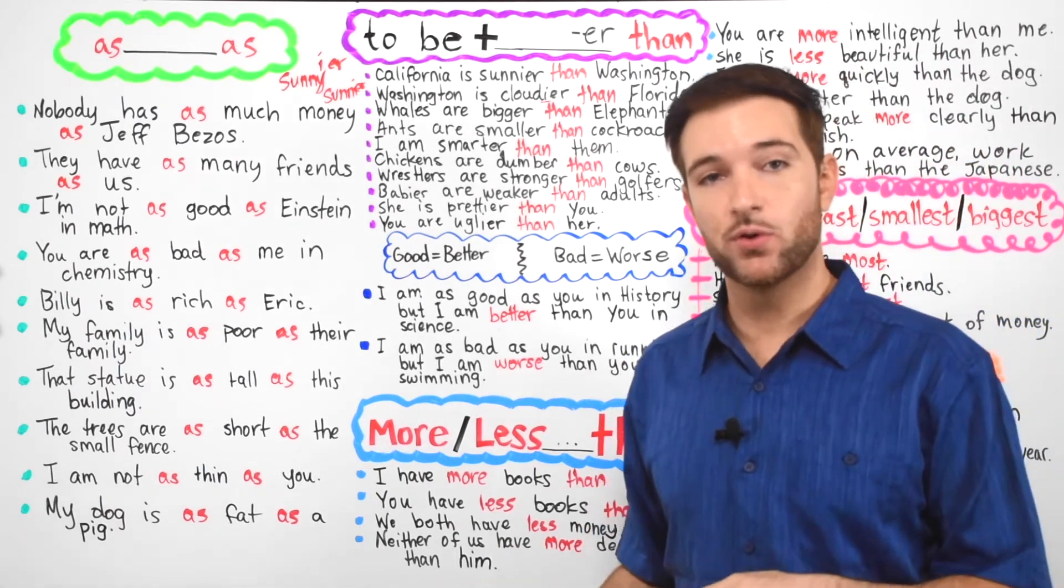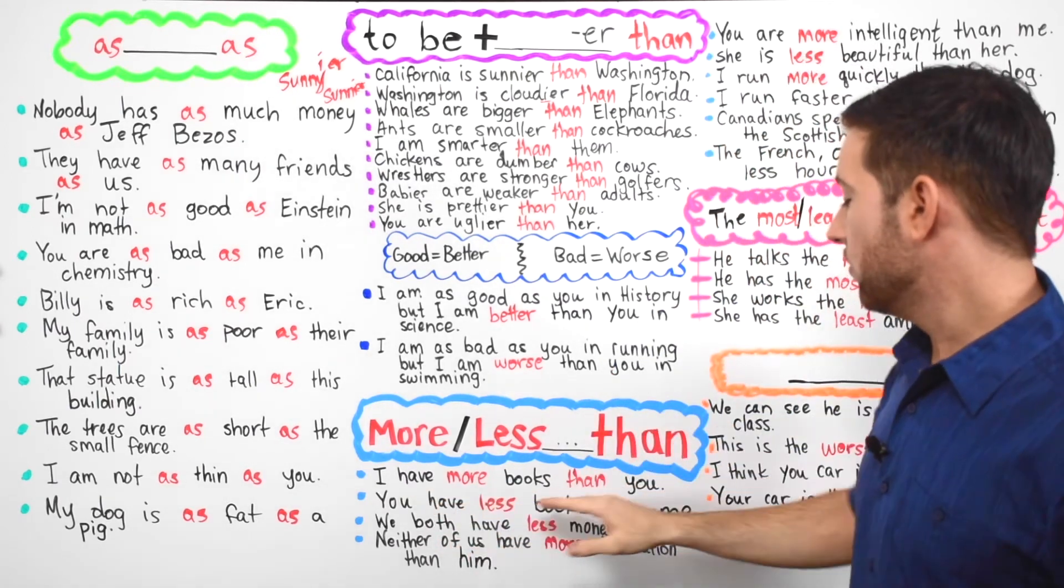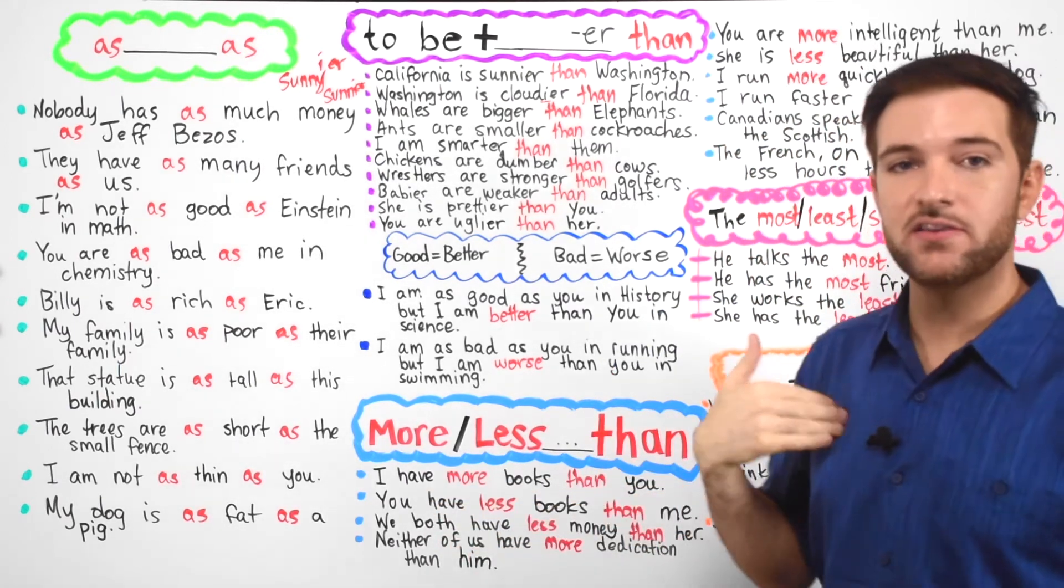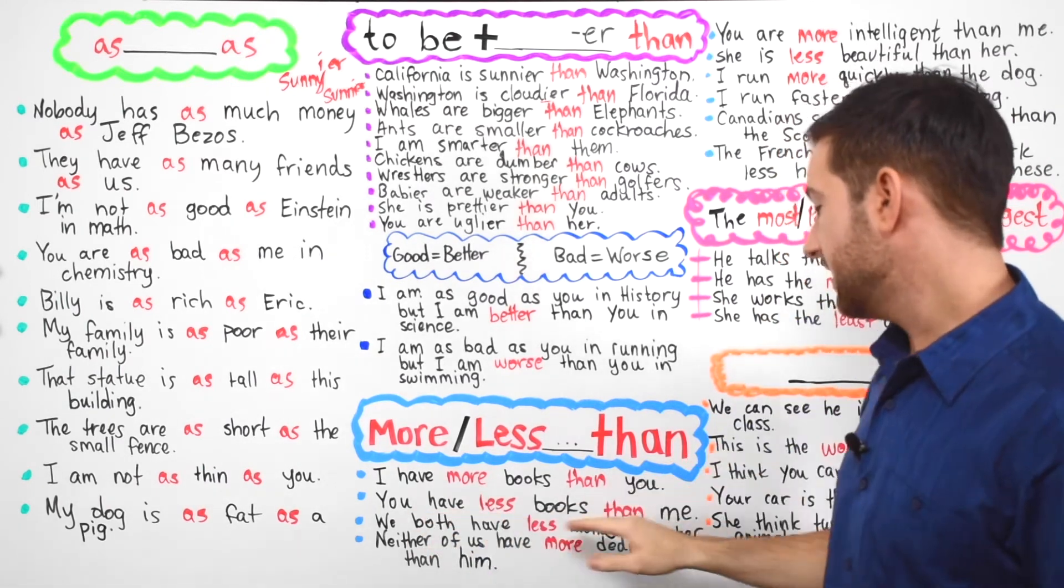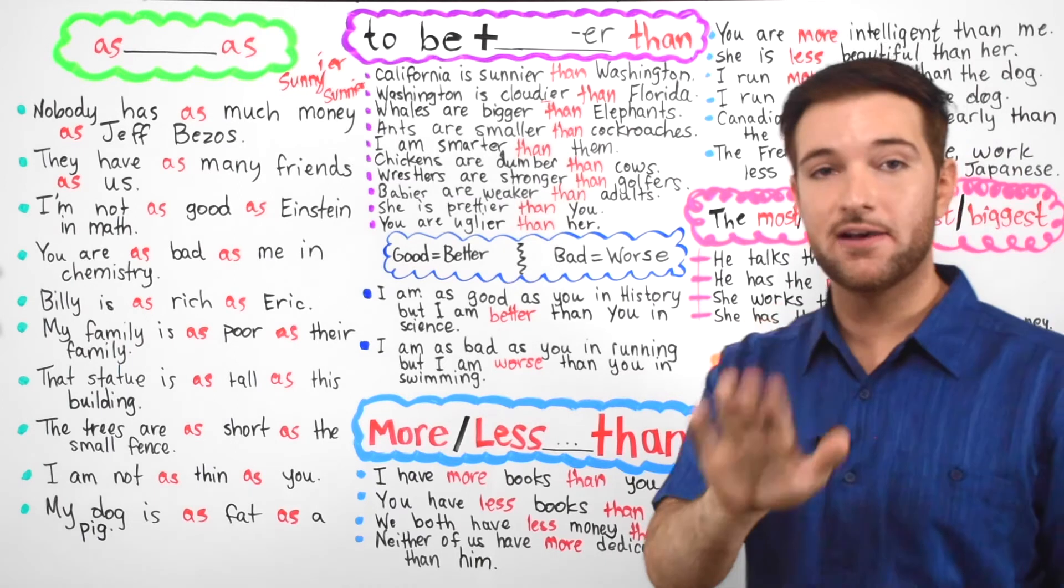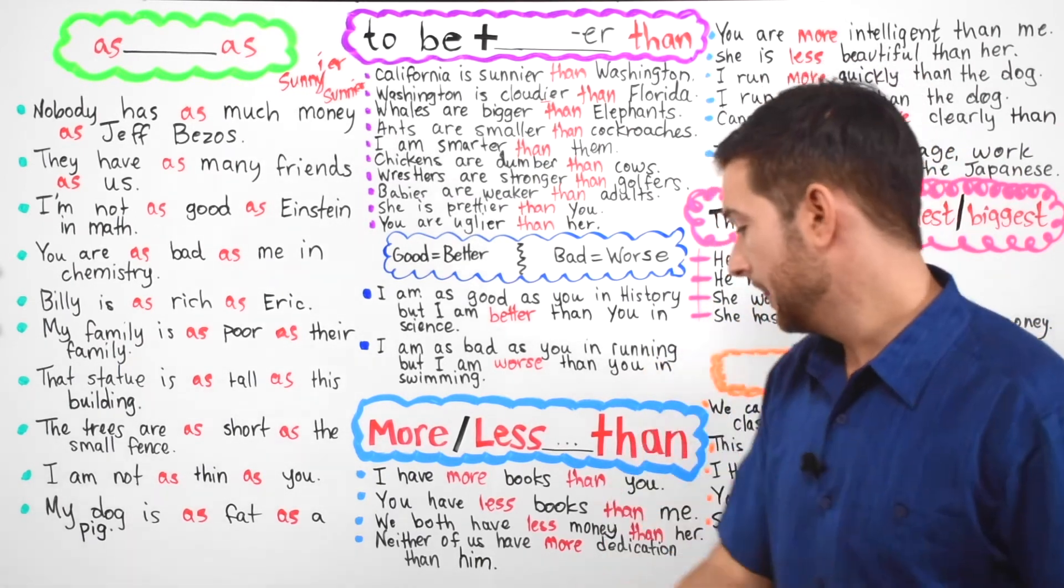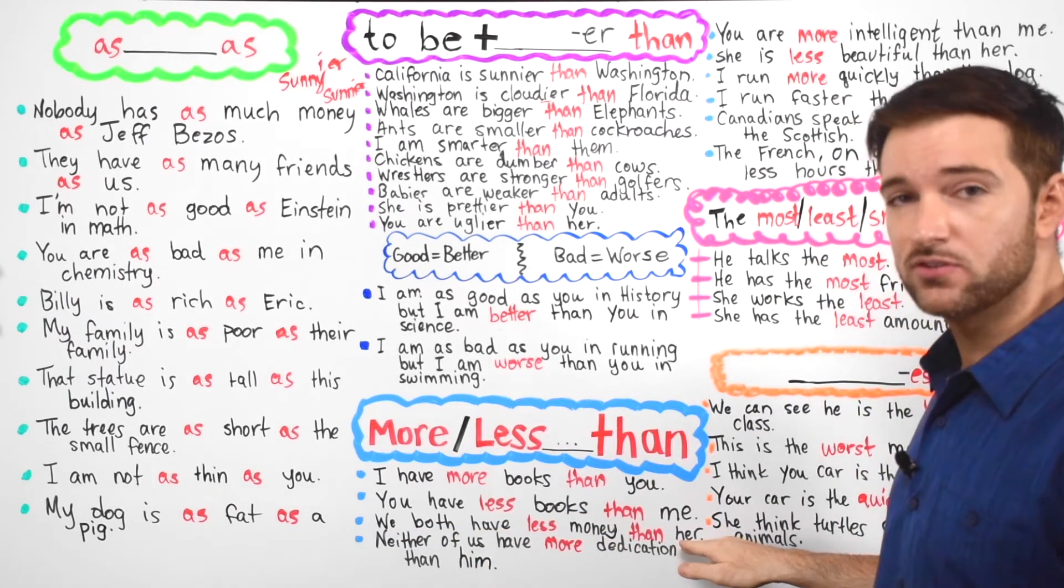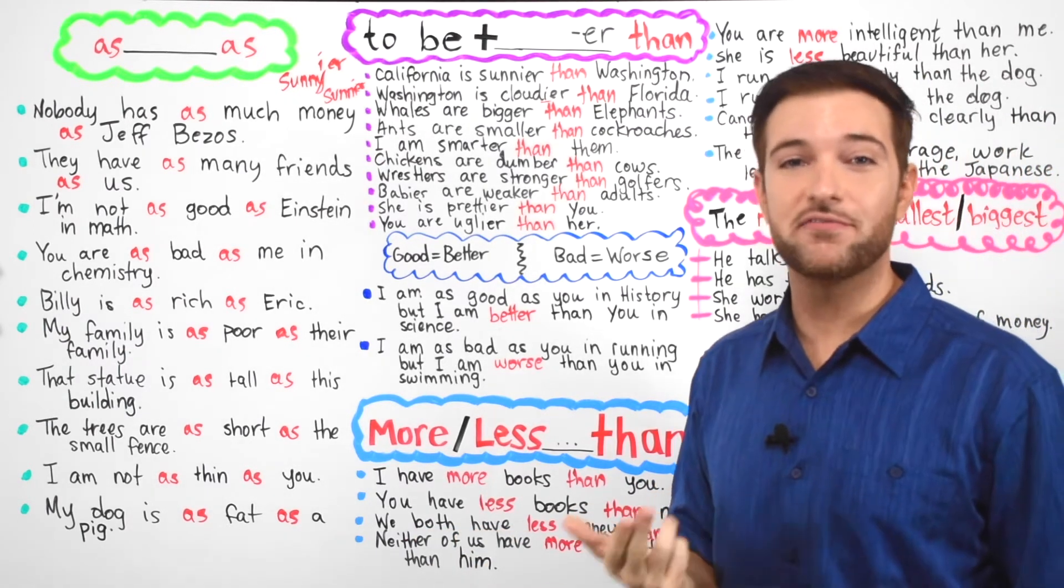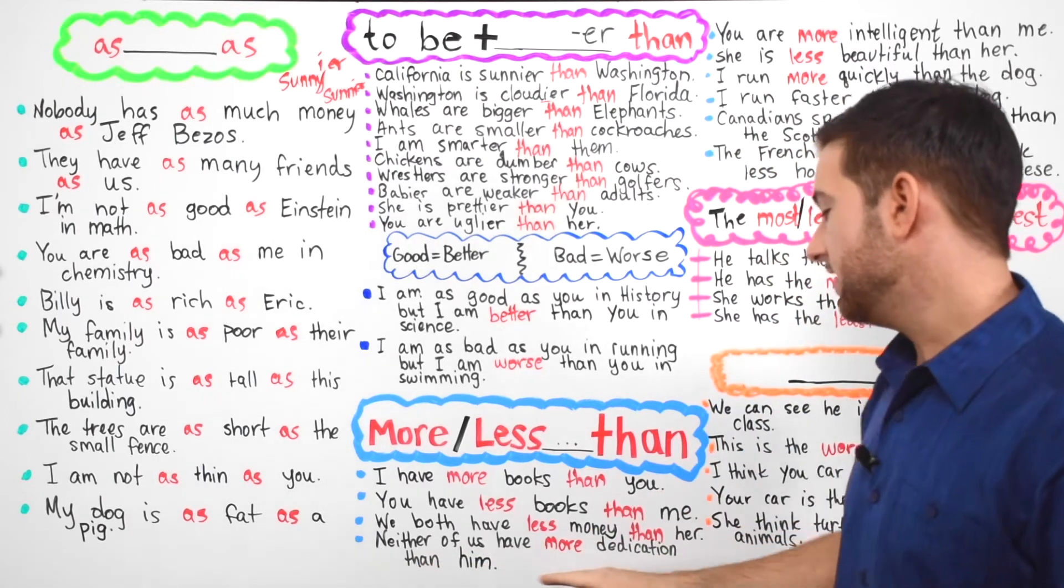All right, now we're going to look at how to say more than something or less than something. I have more books than you. I have five. You have two. I have more books than you. You have less books than me. You have two books. I have five books. You have less books than me. We both have less money than her. She has $100. Me and you, we have $5.